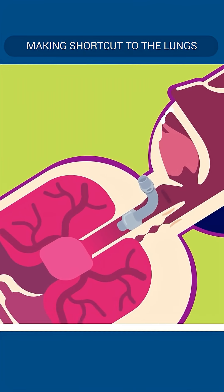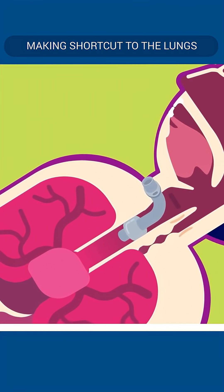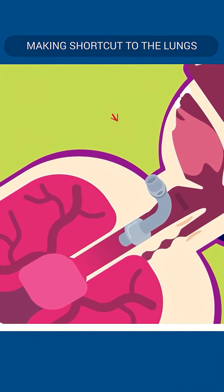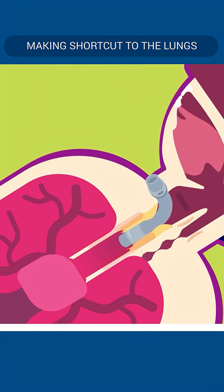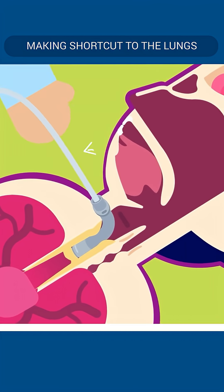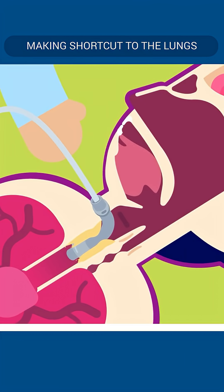The tracheostomy forces the air to bypass the nasal and oral passages. Hence, the air entering the tracheostomy is not adequately humidified. This dry air leads to increased tracheal irritation and secretion production. Because these secretions may lead to crusting and blockage of the tracheostomy tube, the first point regarding care is adequate suctioning of the secretions through the tracheostomy tube.